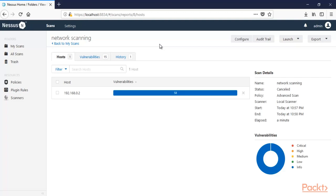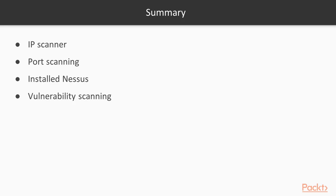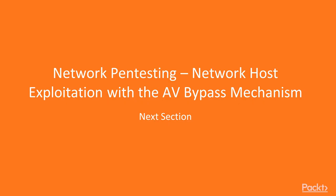For the section summary: we learned about the scanning process of IP addresses, how to perform port scanning using Nmap, how to install Nessus, and finally how to scan for vulnerabilities using Nessus. In the next section we are going to learn about network pentesting, network host exploitation with AV bypass mechanism.